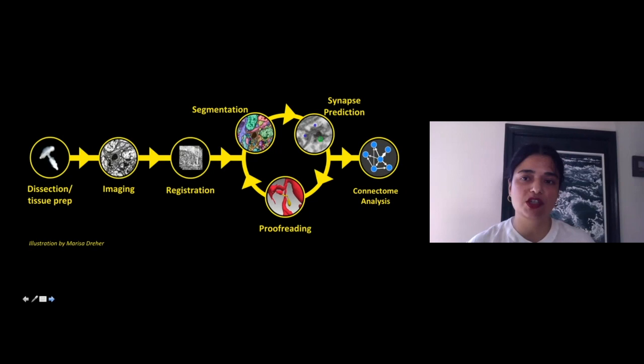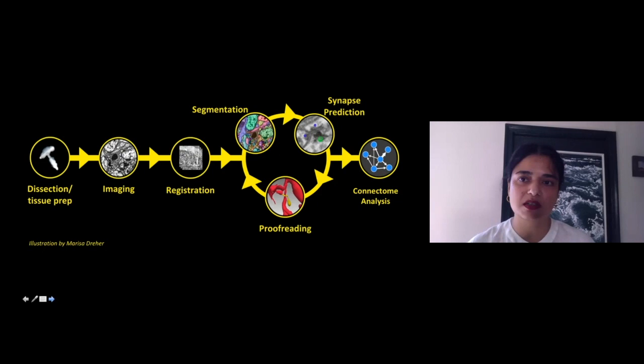Jerry introduced that there are several steps involved in getting to a connectome, starting from prepping the tissue for EM imaging, registering and aligning those images, segmenting that image using automated algorithms by Google where you get entire neuromorphologies, automated ways of predicting synapses on that EM image, and then a human proofreading effort that informs and improves the automated processes to create a connectome that is accurate for analysis.